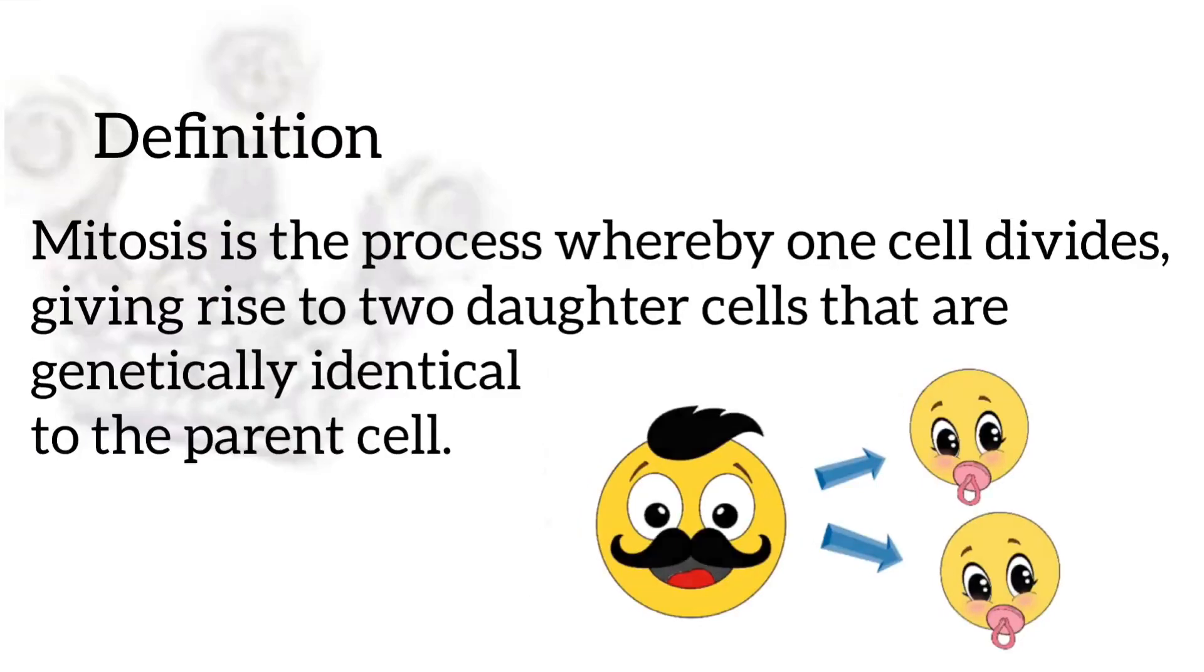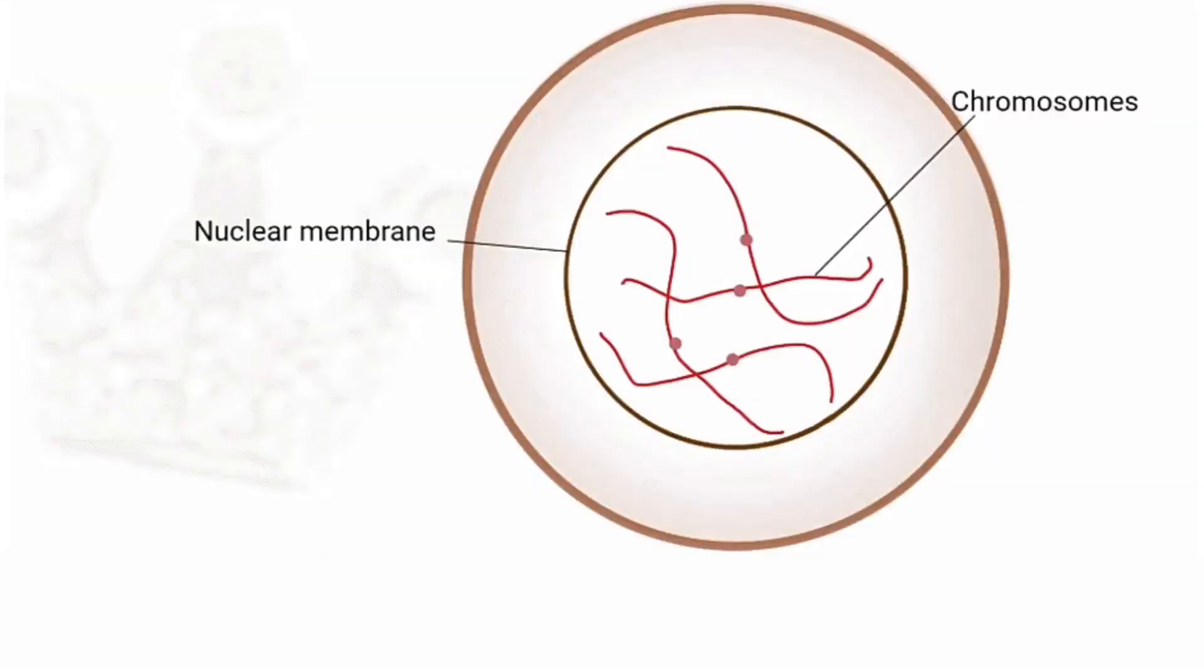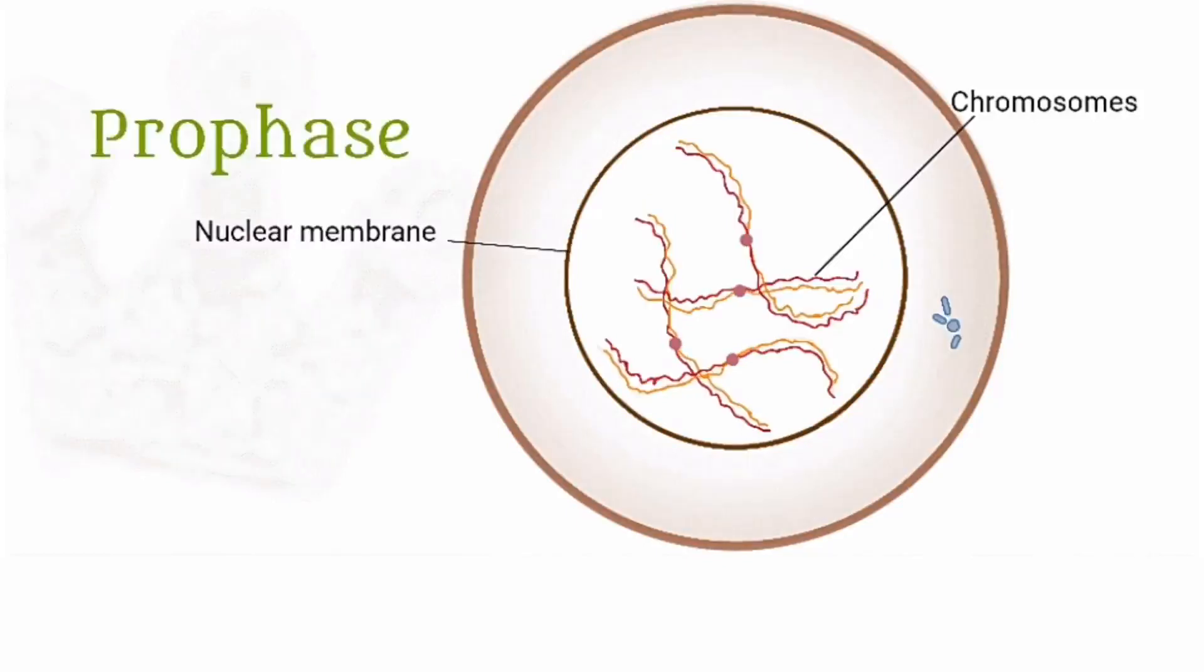The chromosomes are present as extended strands in the early interphase, and on the onset of mitosis, the DNA undergoes replication in the late interphase. Now comes the prophase, where the chromosomes coil, contract, and condense.